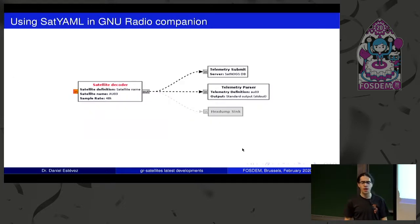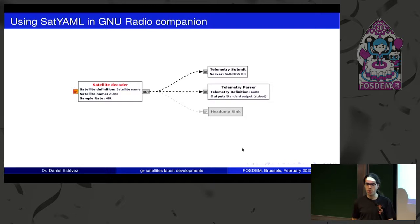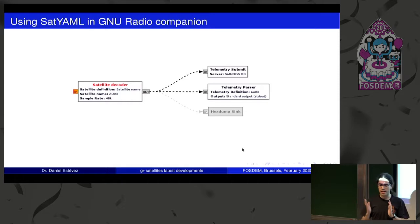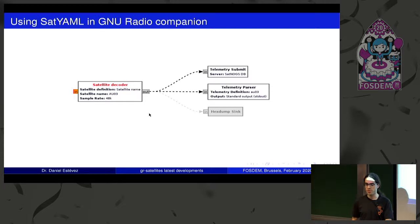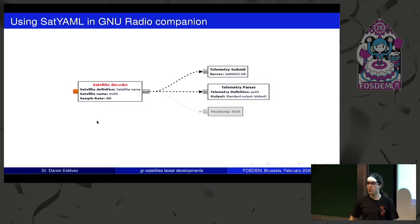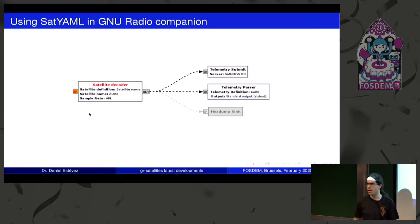You can also use SATYAML in GNU Radio Companion. The way to do that is you have the satellite decoder block, which does most of the work that the command line tool does — it gets IQ samples on one end and on the other end spits out frames. You're free to do whatever you want with the frames without needing to know anything about the satellite. You just write the name or put the path of a SATYAML file, and this block figures out how to put together the decoder.